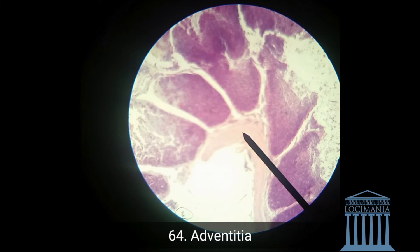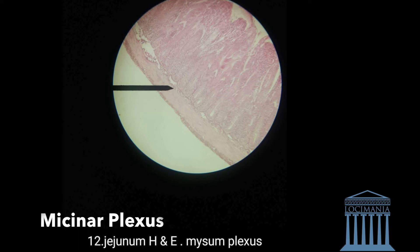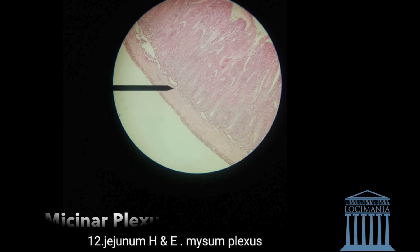Within the submucosa we have the Meissner's plexus. It is not abundant — I couldn't find it in this specimen, so I took it from another specimen. Here is what a Meissner's plexus looks like. Also in the appendix we have no villi; we only have crypts, like in the gallbladder.